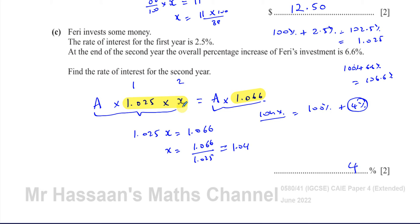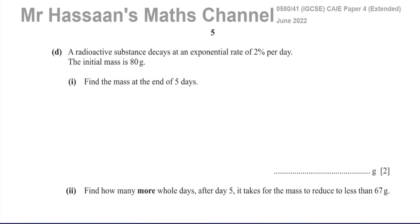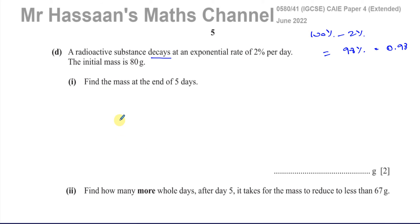So a good understanding of compound percentages is needed for part c. Now part d: a radioactive substance decays at an exponential rate of 2% per day; the initial mass is 80 grams. Find the mass at the end of five days. This is a decay so the mass goes down. The multiplying factor per day is 100% − 2% = 98% = 0.98. So after five days the mass is 0.98 to the power of 5, multiplied by 80.